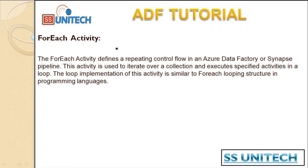The ForEach activity defines a repeating control flow in Azure Data Factory or Synapse pipelines. The activity is used to iterate over a collection and execute a specified activity in a loop. The loop implementation is similar to the ForEach looping structure in programming languages. Basically, it accepts an input array and based on the array values it loops through one by one.